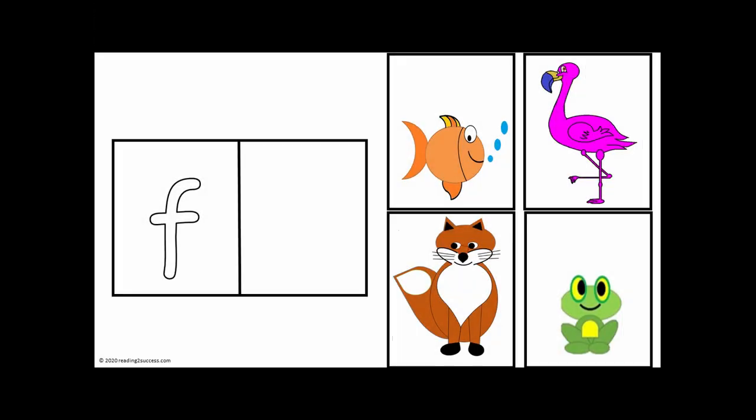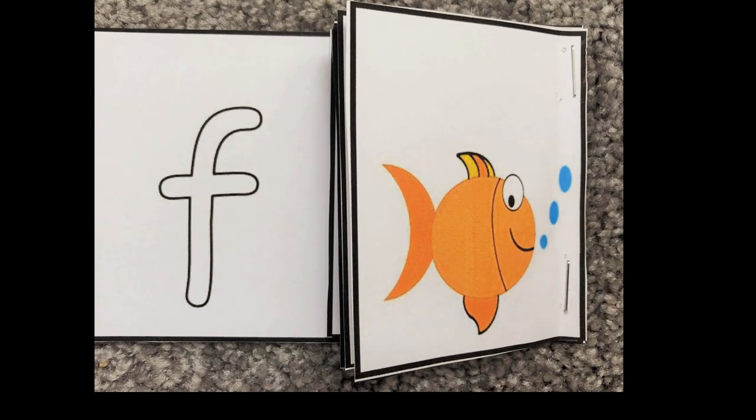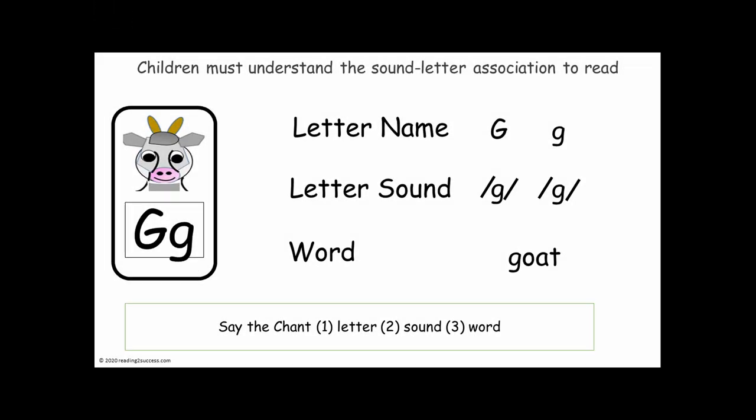This is a template needed to make the little booklet that the video began with. Our next sound letter teaching card is the G card. There is a picture of a goat because G makes the G sound. So I would ask kids to now do the chant: G, G, G, Goat.